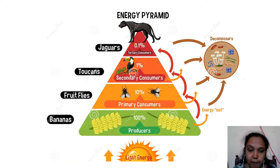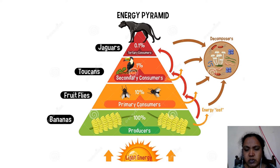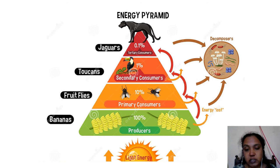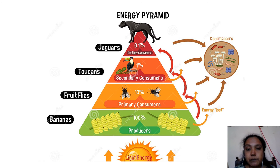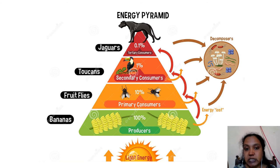Taking into account all the available energy formed by the producers as 100 percent, the primary consumers which eat on the plants use nearly 10 percent of the energy from the producers. The rest of the 90 percent of energy is used by the producers for growth and development to form vegetative and reproductive structures, and for the conversion of light energy into available organic matter. This 10 percent of energy used by primary consumers is again transferred to the secondary consumers at the same rate of only 10 percent, so secondary consumers are using merely one percent of the energy from the producers. The tertiary consumers are using only 0.1 percent of the energy from the producers.